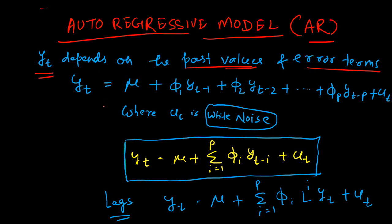The representation of the AR model or AR series is as follows. Yt is the current value of the time series, which depends on its past values like Yt minus 1, Yt minus 2, and so on up to Yt minus p. If there are p lags on which the current value depends, then there will be p number of lags in the model. Apart from that, we also have the error term represented as Ut.